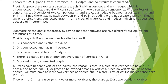Summarizing the above theorems, we can derive equivalent definitions of a tree. A graph G with n vertices is called a tree if: G is connected and circuitless; or G is connected and has n minus 1 edges; or G is circuitless and has n minus 1 edges; or there is exactly one path between every pair of vertices; or G is a minimally connected graph. All trees have pendant vertices or leaves because a tree with n vertices has n minus 1 edges, giving 2(n minus 1) degrees among n vertices, so at least 2 vertices must have degree 1.